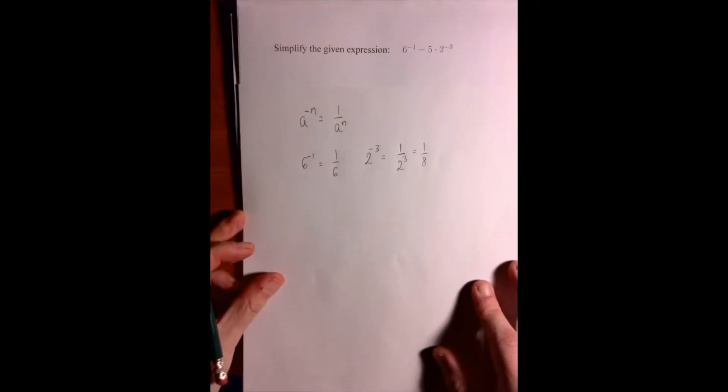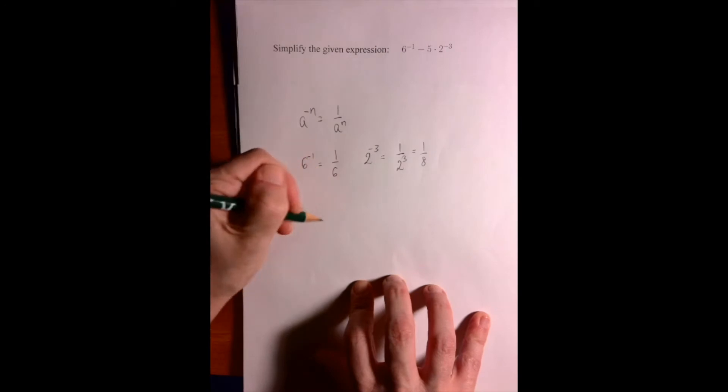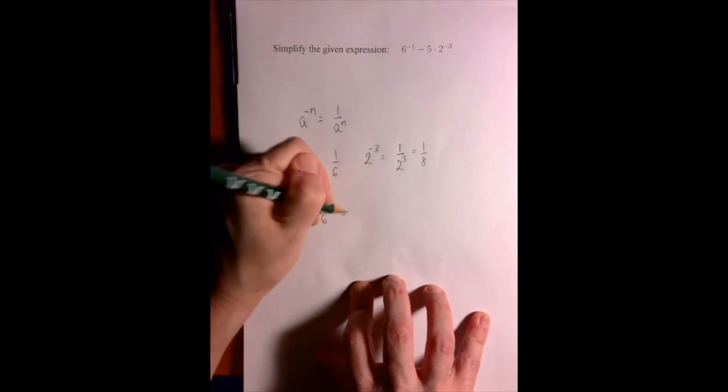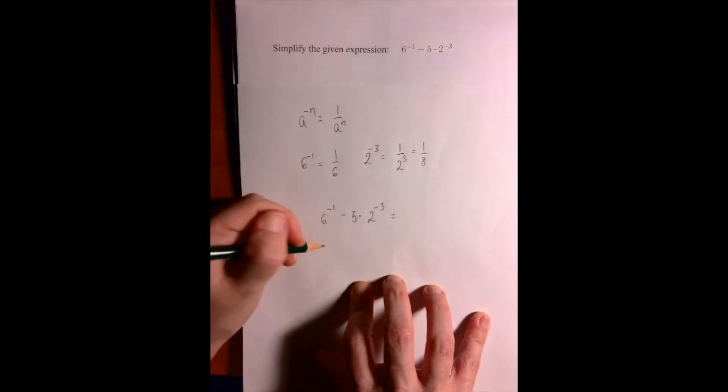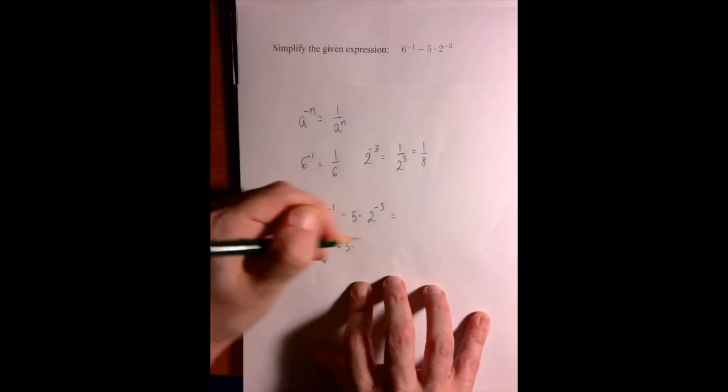After this translation, the entire problem is just a fraction problem, because 6 to the minus 1 minus 5 times 2 to the negative 3 is really just 1 over 6 minus 5 times 1 over 8.